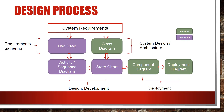A use case diagram is more relevant during requirement gathering. Similarly, class diagrams are more helpful during system design and architecture. Activity diagram, sequence diagram, and state chart play an important role during system design and development. Component diagrams and deployment diagrams are used extensively during the deployment and production phase.